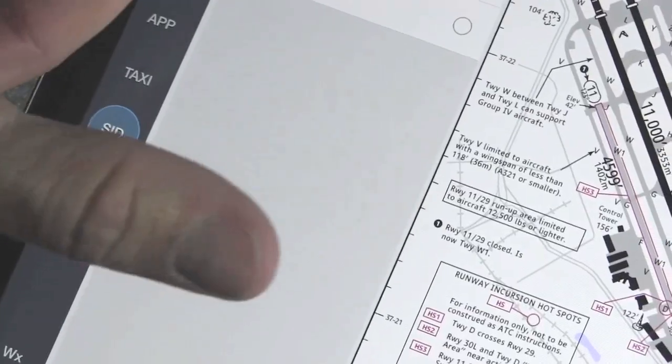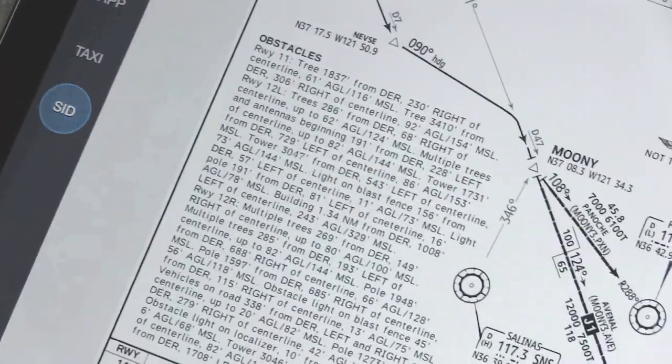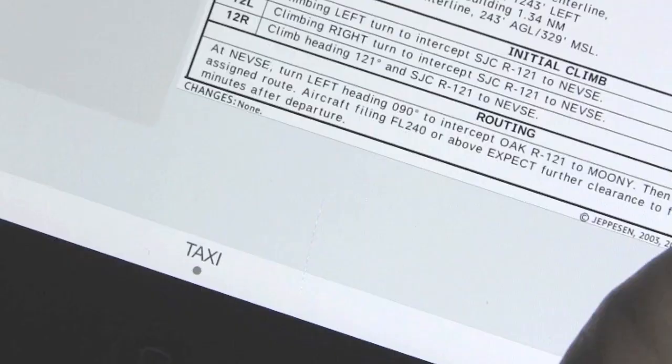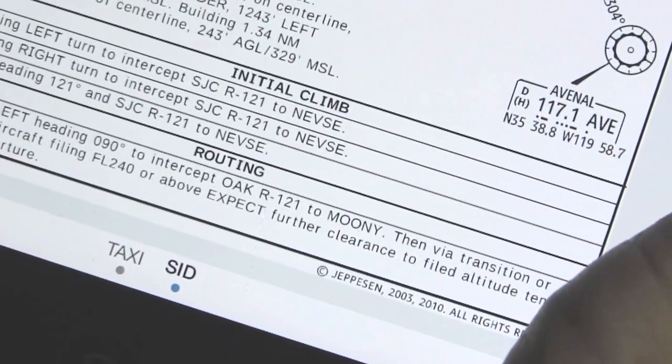For leaving San Jose, I need to select a departure. For this flight, I'm going to take the Mooney 3 departure. I'll select that. And you can see that added that to my chart clip at the bottom of the chart display.